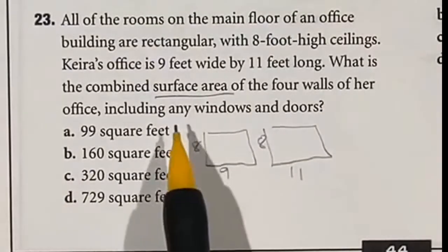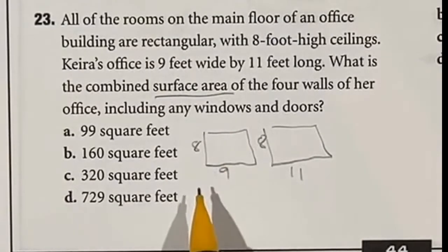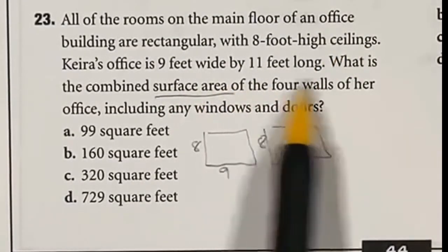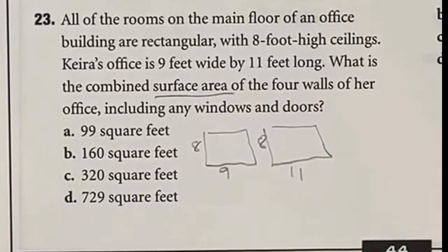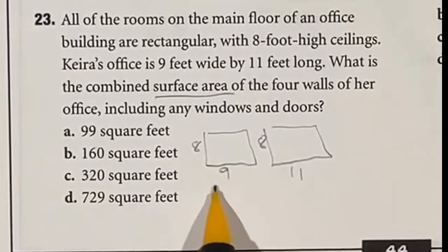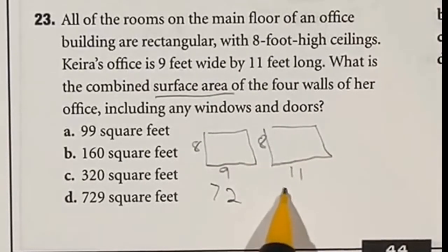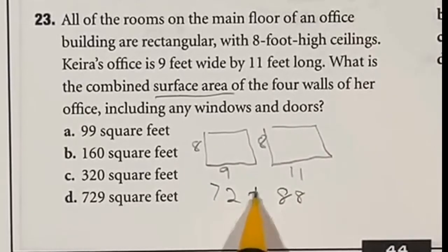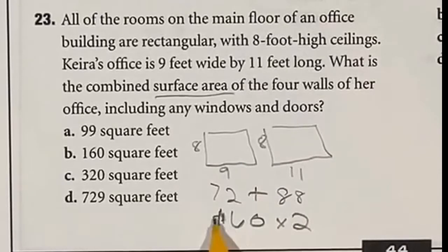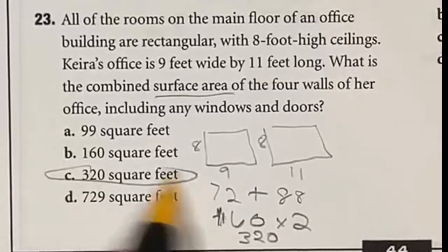For number 23, we have to find the surface area of a room with an 8-foot-high ceiling, 9 feet wide and 11 feet long. Area is length times width, so the wall with the 9-foot length is 8 times 9, which is 72. The other wall is 8 times 11, which is 88. Adding those together gives 160. There are two of each wall, so multiply by 2, changing 160 up to 320. Final answer: C.